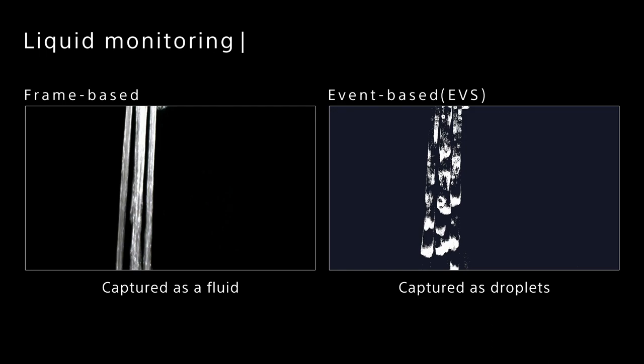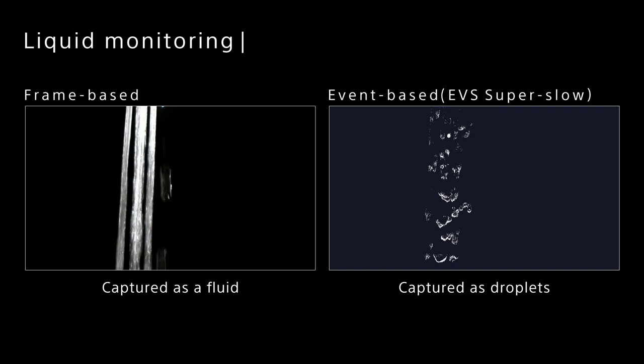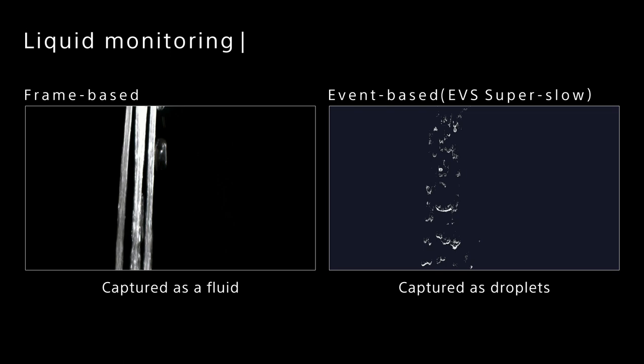Liquid monitoring. Water flowing out of the faucet can be captured as droplets. It is possible to extract images in slow motion and capture the image at a specific timestamp. This allows us to observe the movement of droplets, which is difficult to detect with conventional methods.